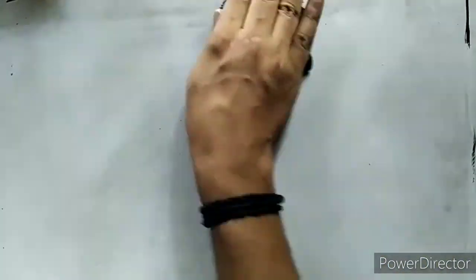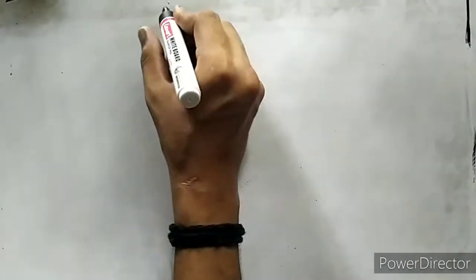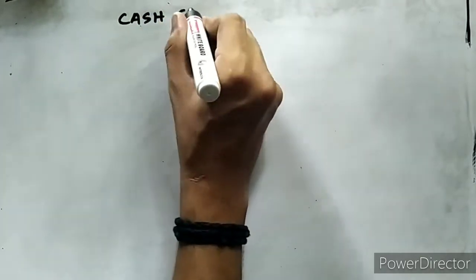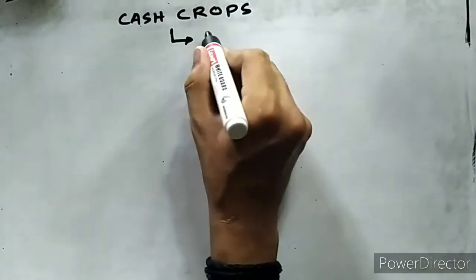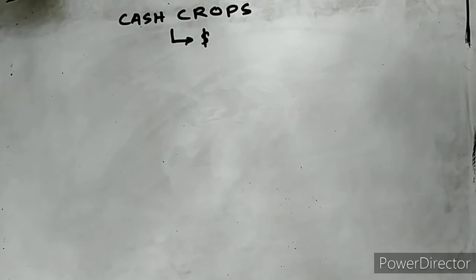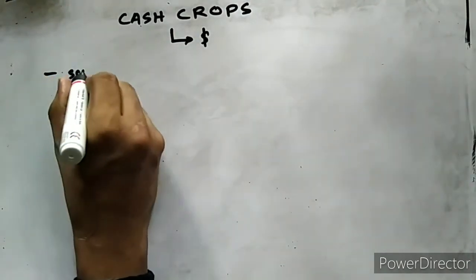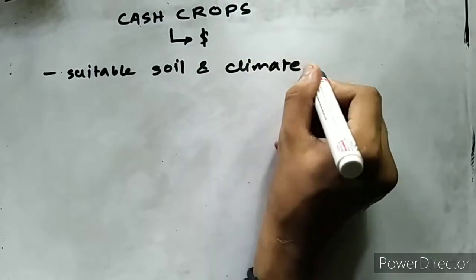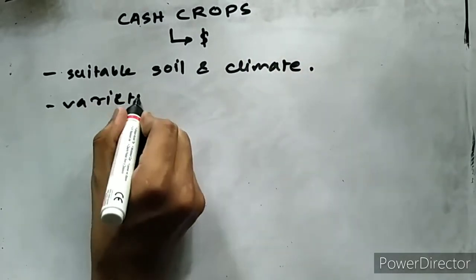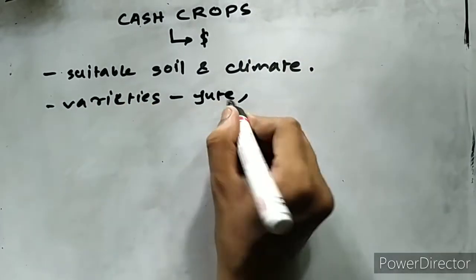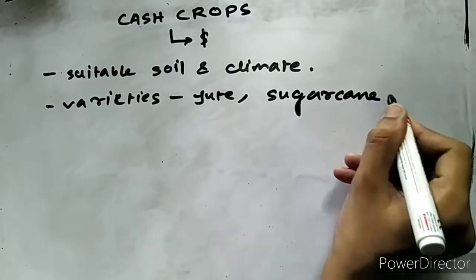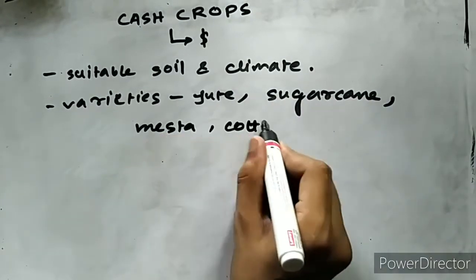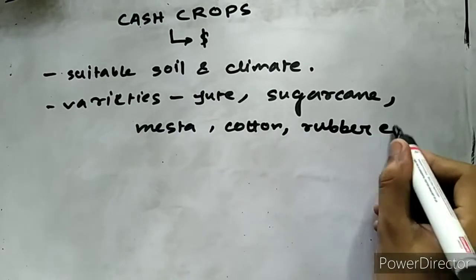Next we move to the cash crops. Cash crop is an agricultural crop which is grown to sell for profit rather than to eat or use by themselves. The soil and climate of Assam is such that it can produce a variety of tropical crops, of which jute, sugarcane, mesta, and cotton are the traditionally common.